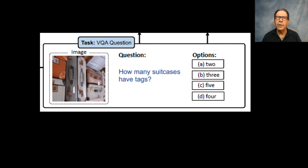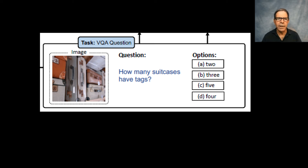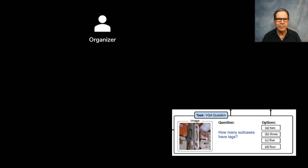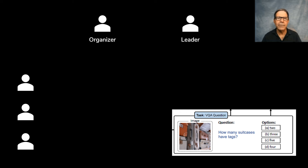The authors designed a network where different agents communicate with each other in natural language to work out solutions to problems amongst themselves. That approach was applied to seven different types of problems. Here's an example of the framework being used in a situation where we have an image and a multiple choice question about it.